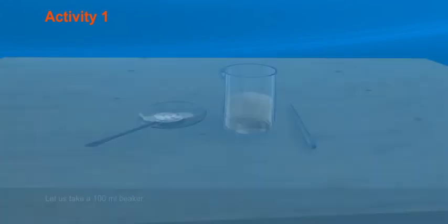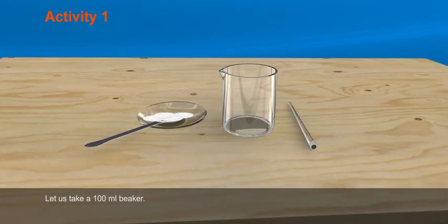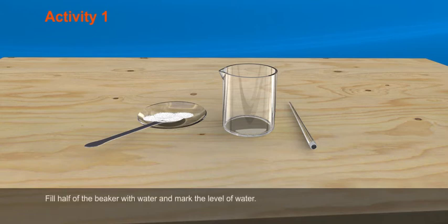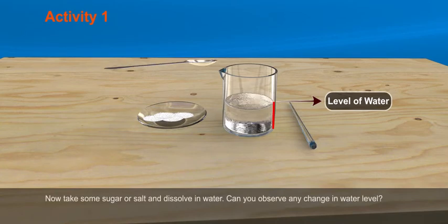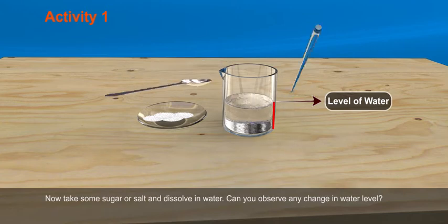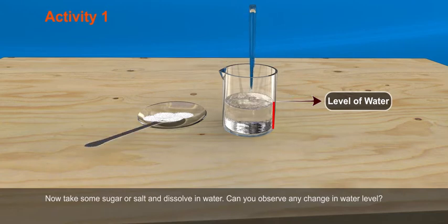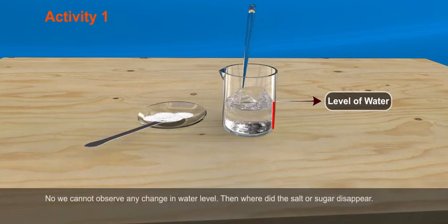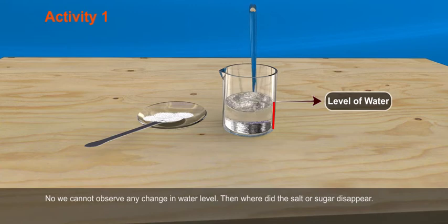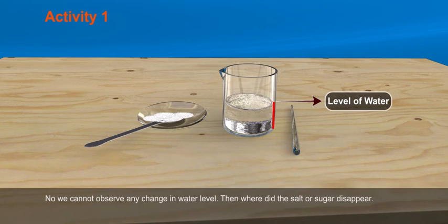Activity 1. Let us take a 100 ml beaker, fill half of the beaker with water and mark the level of water. Now take some sugar or salt and dissolve in water. Can you observe any change in water level? No, we cannot observe any change in water level. Then, where did the salt or sugar disappear?